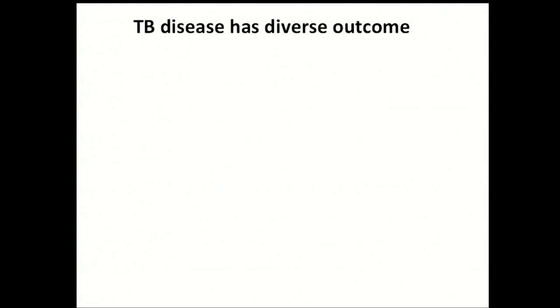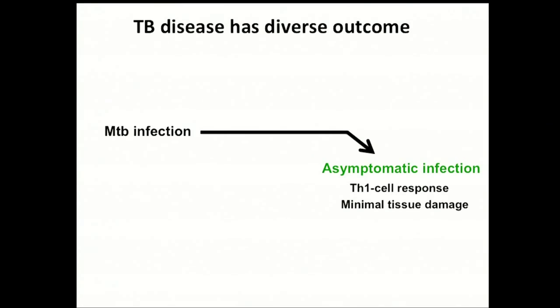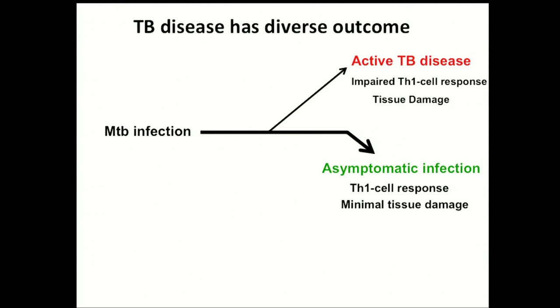TB disease has diverse outcomes. The majority of individuals infected with TB can control the infection very well and most remain asymptomatic for years, decades, or sometimes lifelong. They have a good T cell response to various TB antigens and never develop tissue damage, or barely minimal tissue damage. Whereas a few unfortunate individuals develop active TB disease, marked by extensive damage to tissue architecture and an inability to mount a potent T cell response to the antigens. That is the major cause of mortality due to TB disease.